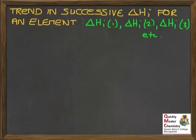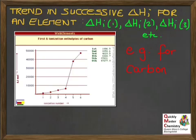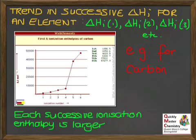The final trend to describe is the trend in successive ionisation enthalpies for an element — how the first ionisation enthalpy compares to the second, third, and so on. Taking carbon as an example, which has atomic number six and six electrons, this shows the first six ionisation enthalpies — literally removing all six electrons one by one. Looking at the graph, each successive ionisation enthalpy is larger than the one before. We also observe a seemingly surprising large jump at some point; for carbon, it occurs after the fourth ionisation enthalpy, with a huge jump to the fifth.